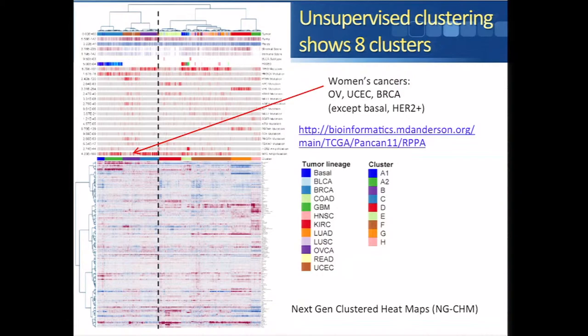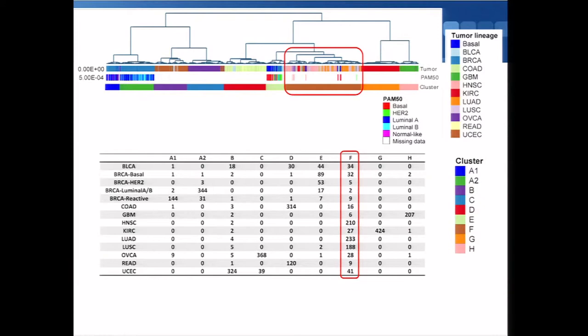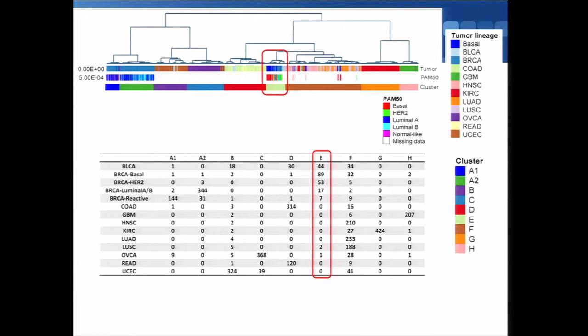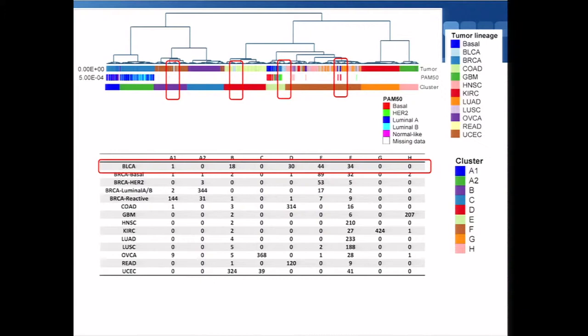Zooming in on this heat map, most clusters cluster by tumor type, but there are a few exceptions. Cluster F has a mixture of many different tumor types — mainly squamous tumor types: head and neck, lung adeno, lung squamous, and some squamous bladder samples. The other cluster without a one-to-one correspondence with tumor type was cluster E, which had basal breast, HER2 breast, and ironically a few bladder samples — those being the HER2-high bladder samples.